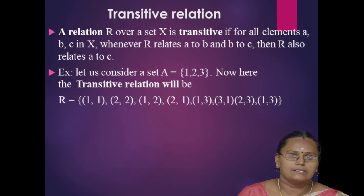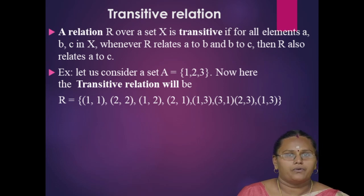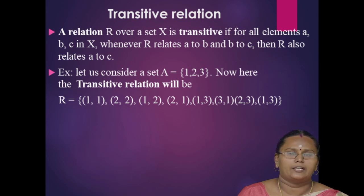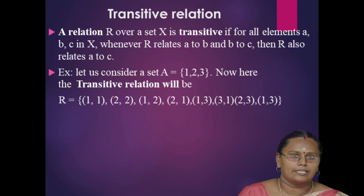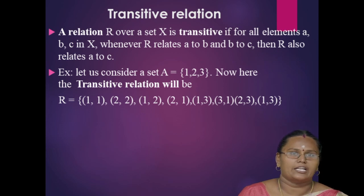Next, transitive relation. A relation R over a set X is transitive if for all elements A, B, C in X, whenever R relates A to B and B to C, then R also relates A to C. That is, A related to B and B related to C implies A related to C.